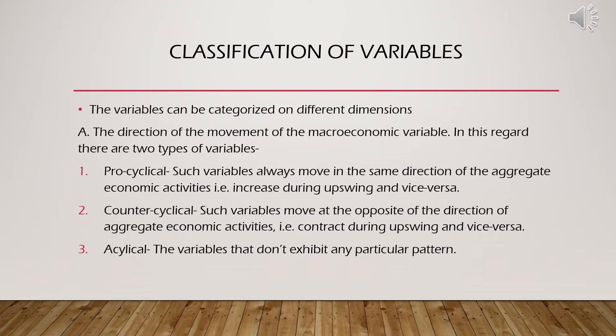Next are counter-cyclical variables — these variables move in the opposite direction of the business cycle. So whenever there is economic expansion, the value of such variables will decline. These are called counter-cyclical variables. And there are also some variables which are acyclical — they have no relationship or don't exhibit any particular pattern of change along with the business cycle.